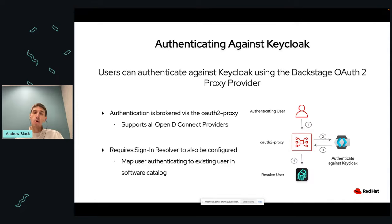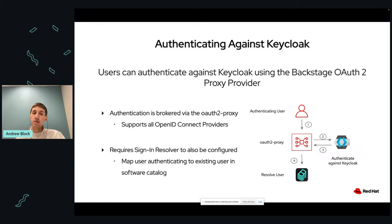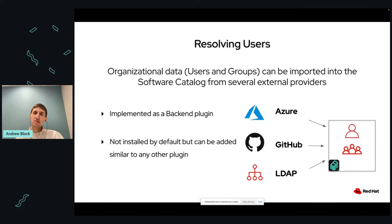The best part is you can easily authenticate against KeyCloak using Backstage, because Backstage includes an OAuth 2 proxy provider which allows any OIDC-based provider to be integrated into the Backstage ecosystem. All you need to do is set up this OAuth 2 proxy in front of your Backstage instance and configure it to point to KeyCloak, and it will allow you to authenticate against KeyCloak and bring your users in to log in to Backstage.